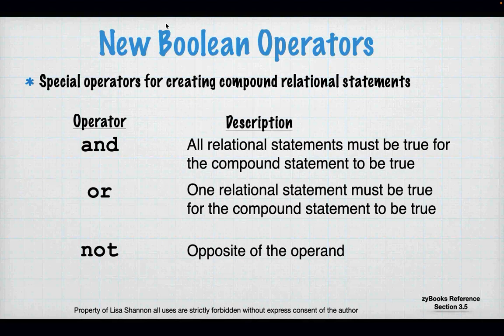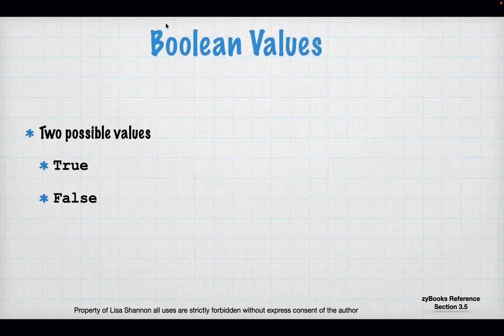With 'and', the left-hand and the right-hand both have to be true for it to be true. 'Or' means at least one relational statement must be true for the compound statement to be true. So 'and' is for the entire statement, 'or' is for one piece of the statement, and 'not' is the opposite of the operand. This is all about getting true or false.